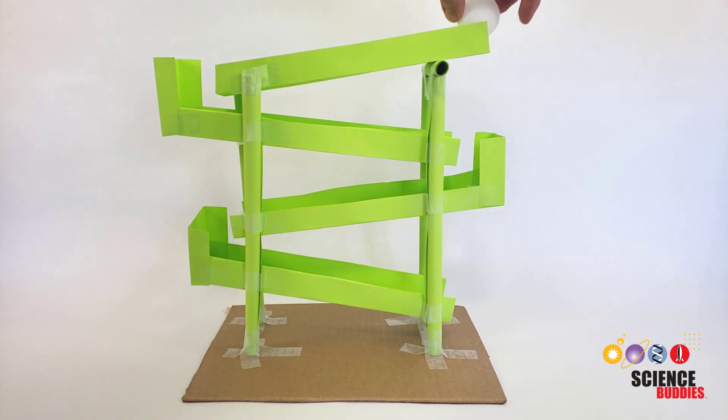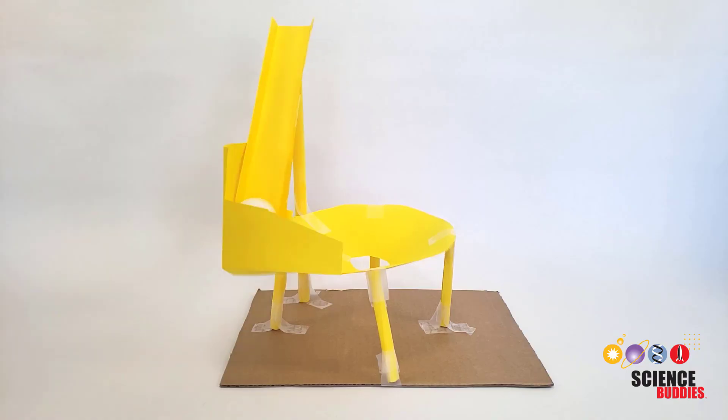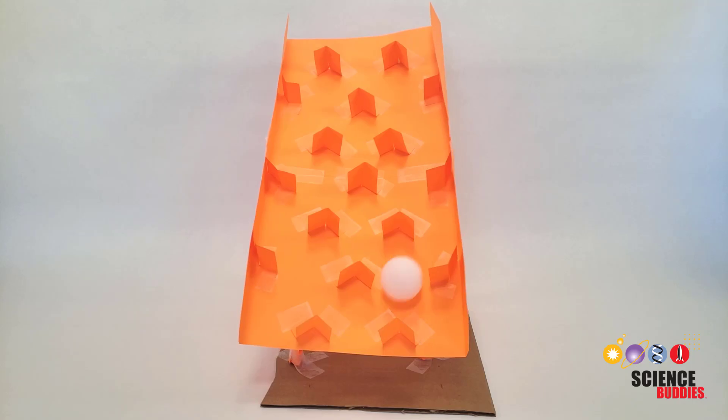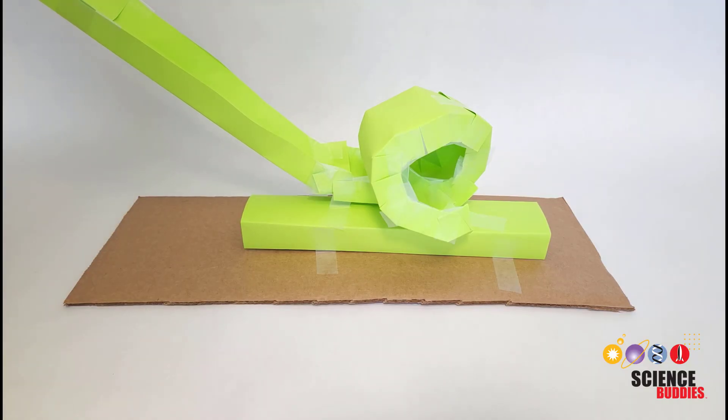You've already seen that one way to do this is to make the ball's path longer, but you can also try making your entire ball run taller or adding various obstacles, friction, or other features that can slow the ball down. For an optional added challenge, try to get the ball to go through at least one loop before it reaches the bottom.